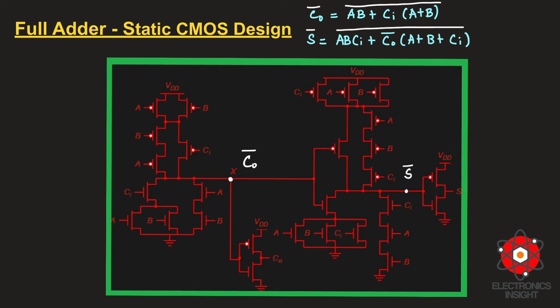For the sum circuit, C₀_bar is used as one of the inputs. The sum complement expression is S_bar = (a·b·ci + C₀_bar·(a+b+ci))_bar. In the pull-down network, C₀_bar is in series with (a + b + ci), where the a, b, ci transistors are in parallel. The a·b·ci term places all three in series with that branch. The dual implements the pull-up network. A final CMOS inverter gives the actual sum output.